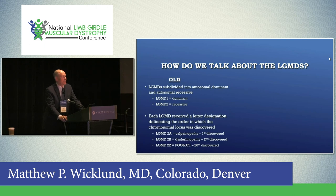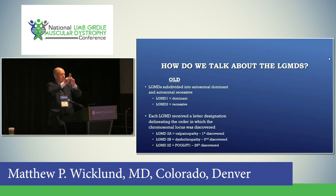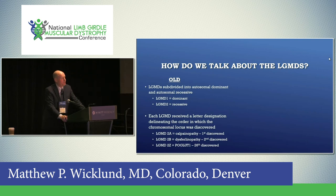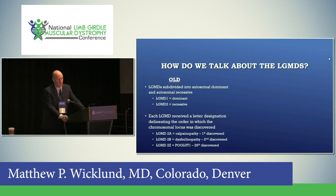The old nomenclature, from the 1990s when we only had several of these: if it's dominant, we put a one; if it's recessive — meaning mom had a copy, dad had a copy, and it takes two copies to cause disease — it received a two. Then you got a letter depending on the order in which each disorder was discovered. For example, LGMD2A is calpainopathy — the first discovered of the recessive forms. LGMD2B is dysferlinopathy.